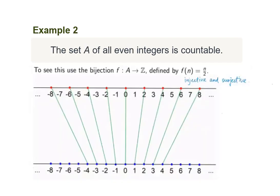Example 2. The set A of all even integers is countable. We know from Example 1 that the set of integers is countable. Therefore, it has a bijection with the set of natural numbers. By definition, a set A is countable if there exists a bijective function that maps A to N. Therefore, the set A is also countable if there exists a bijective function that maps A to Z, the set of integers.